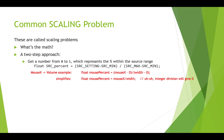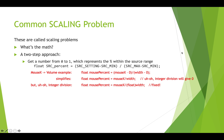So mousePercent = mouseX / width. But be careful — we've already talked about the issues of integer division when assigning to a float. mouseX is an integer and width is an integer, so that would give us zero no matter where the mouse was. We should cast one of these values to a float to ensure float division and get the correct result.